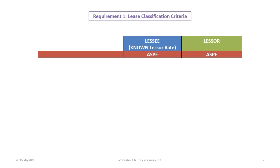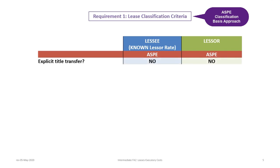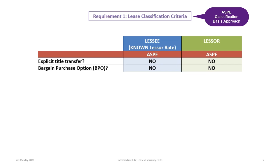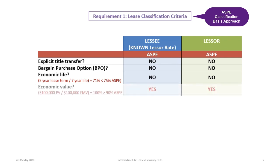Now that we have determined the payment and the present value of the lease, we can assess the criteria. Using the classification basis approach under ASPE for both the lessee and the lessor, we start with examining whether there is an explicit transfer of title — in this case there isn't. Next we look for a bargain purchase option (BPO) — again there is none. The third criteria is the economic life test: 5-year lease term divided by 7-year useful life is 71%, which is less than the 75% ASPE benchmark, so that criteria is not met. The fourth criteria is the economic value test: $100,000 PV divided by $100,000 fair market value is 100%, which exceeds the 90% ASPE benchmark, so this criteria is met and triggers a capital lease.